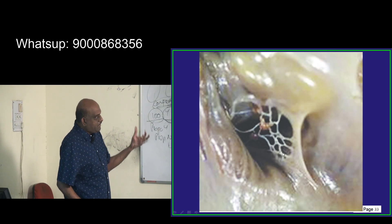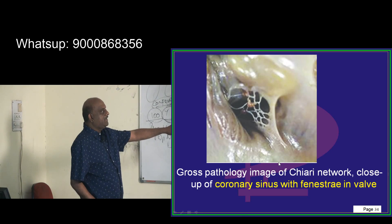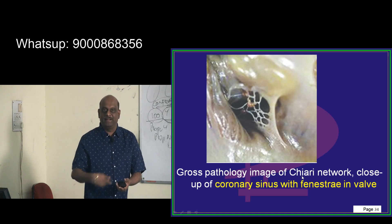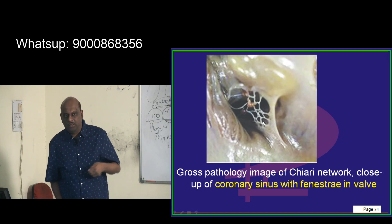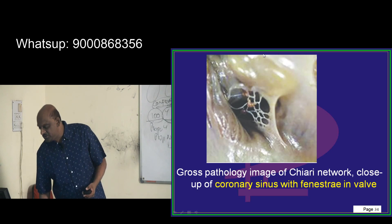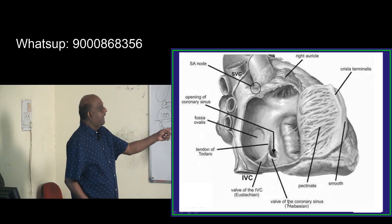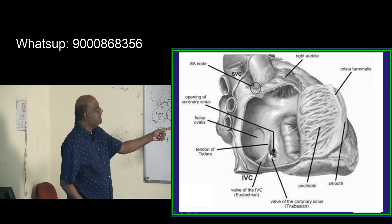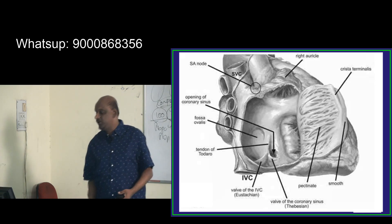This is how the fenestrated Eustachian valve — the Chiari network — looks. Another reason it matters: if you are an interventional cardiologist passing a catheter, the catheter can get stuck in the Chiari network, making passage challenging. To summarize: the Eustachian valve is at the opening of the IVC, and its fenestrated appearance is called the Chiari network.